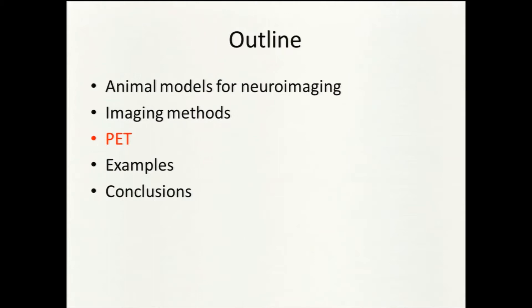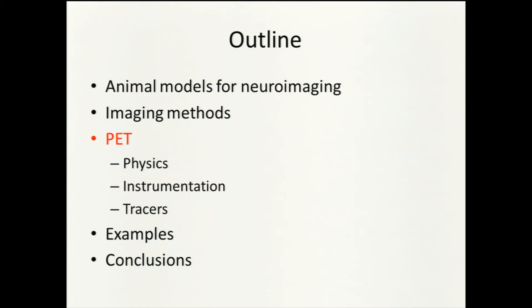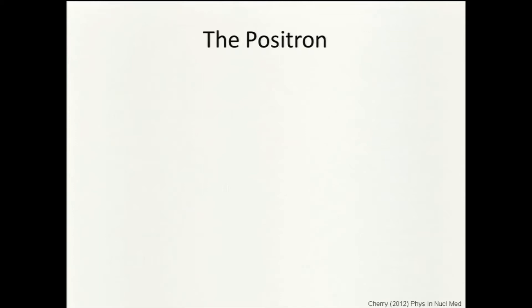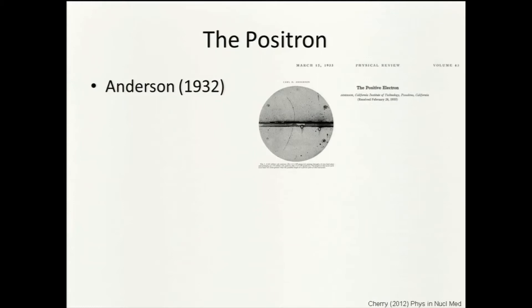Now I'll speak in more detail about PET as an imaging modality — first the physics, then the instrumentation, then the tracers. PET is positron emission tomography, making use of positrons, which are a form of antimatter. The positron was discovered in 1932 when Anderson was looking at cosmic rays using cloud chambers and saw particles with the mass of an electron but positive charge — a positive electron, a positron.